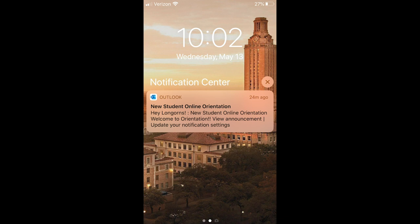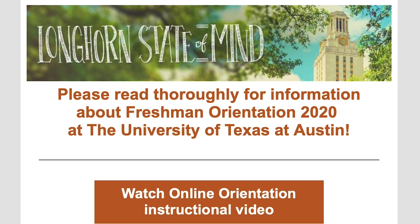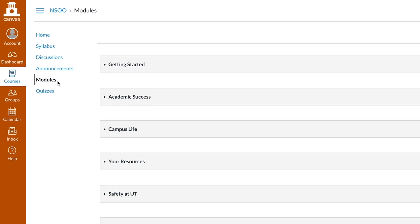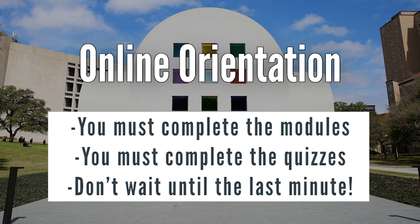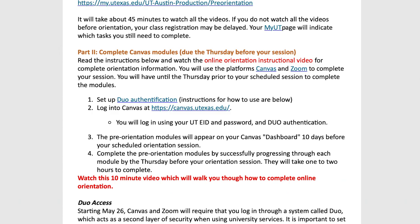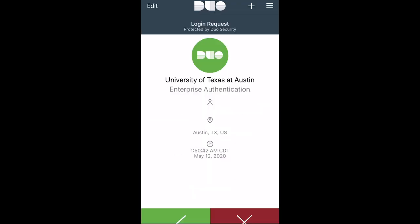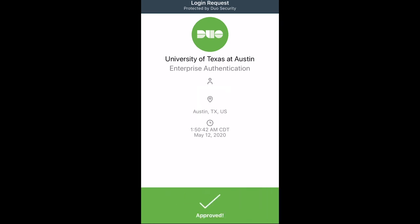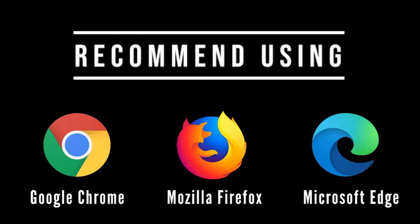First, we'll review the Canvas modules. Ten days prior to the scheduled date of your virtual orientation experience, you'll gain access to a Canvas course that contains your orientation modules. You must complete the modules and the associated quizzes in order to participate fully in the virtual orientation experience. It may take some time to complete the entire course, so don't wait until the last day. Click the link in your email — this will take you to Canvas. Log in with your EID and password, and you'll need to use Duo for two-factor authentication starting June 2nd. We recommend you use Chrome, Firefox, or Edge to access the Canvas course.